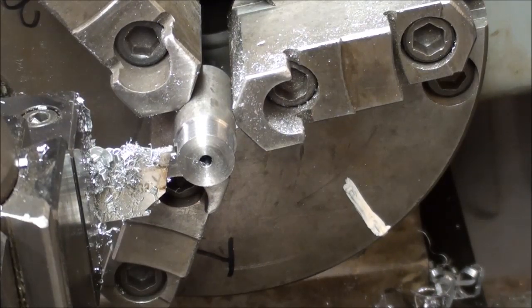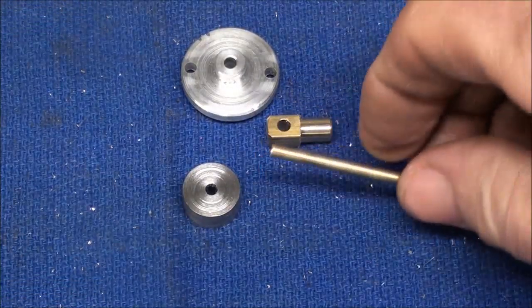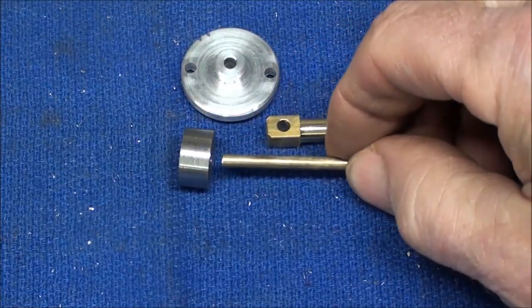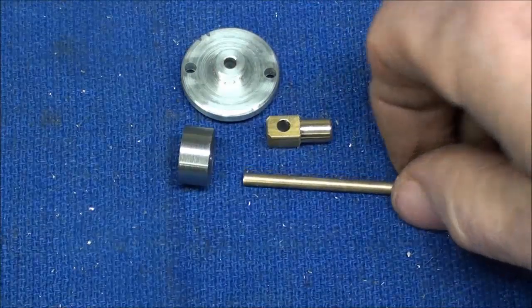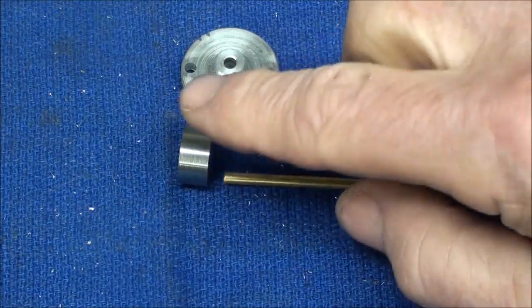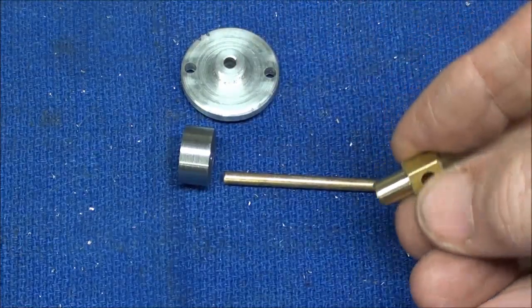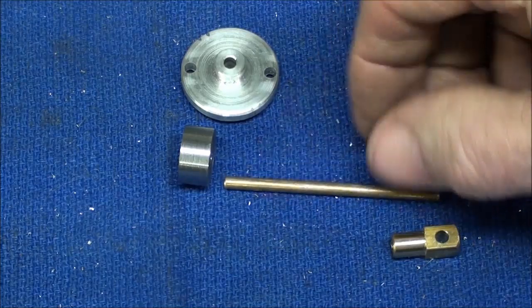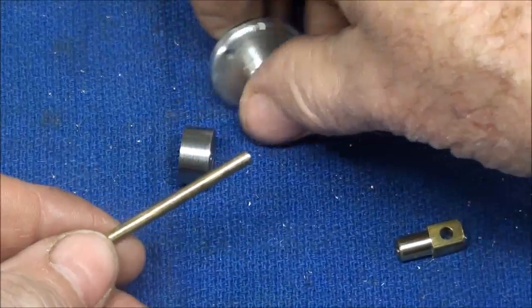I will now use Loctite to fasten the little piston rod into the piston. Remember this is still oversized and let that wait to set. But do not fasten it into this piece yet because first of all we do not know the final length of this rod yet and that'll be determined upon assembly.